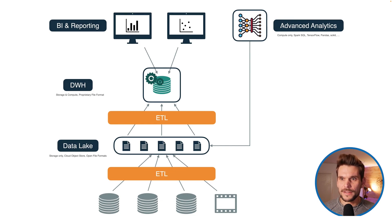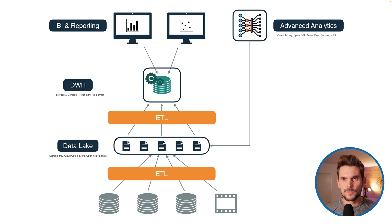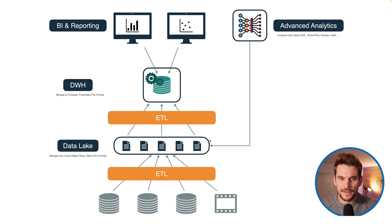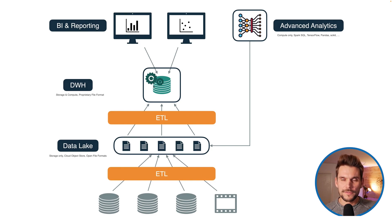Additionally, we have advanced analytics use cases like machine learning or AI. These are usually built with libraries designed for file access, so the advanced analytics use cases access the data lake directly — that's one of the arguments for having a data lake in the first place. Also, the data warehouse, if it becomes very large, may become very expensive to operate and to pay for the licenses. That's why we have the so-called two-tier architecture.